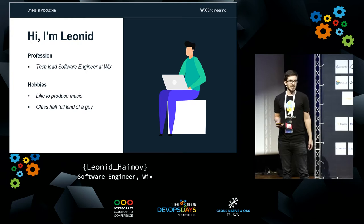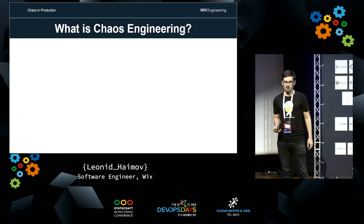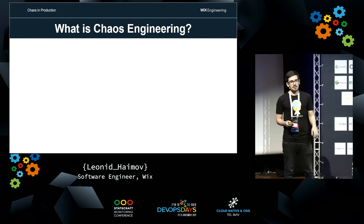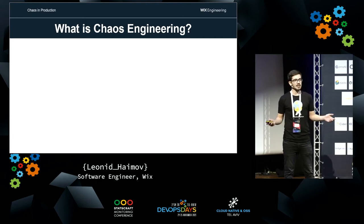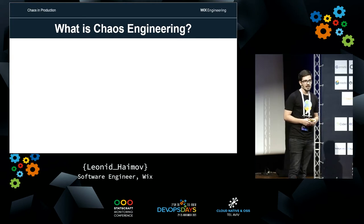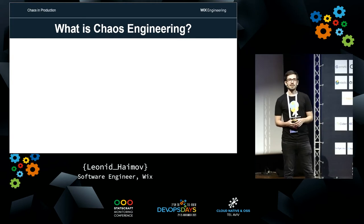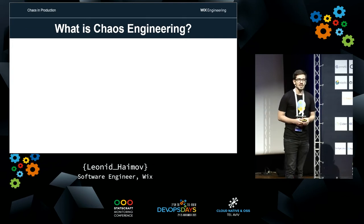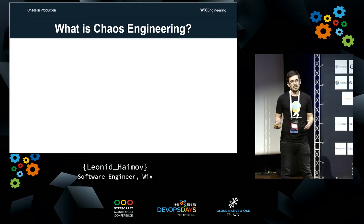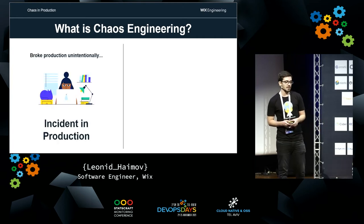So what is chaos engineering? When you deploy something in production and it breaks half of your system, that's called 'well, I'm in trouble.' But when you do the exact same thing on purpose, that's called chaos engineering. Generally speaking, chaos engineering is a way to test if your system is resilient and strong enough against any problem that can occur.